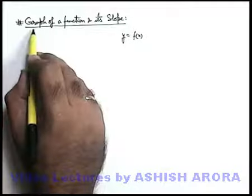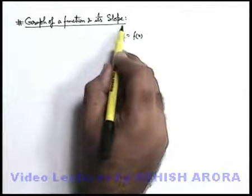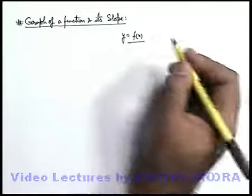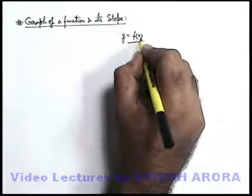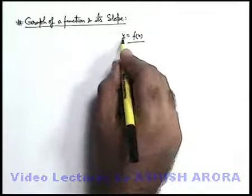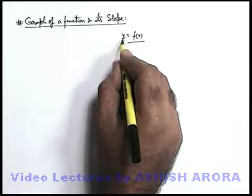Now we'll discuss another concept, that is graph of a function and its slope. We have studied about normal explicitly defined functions as y is equal to f of x. For each value of x there exists a particular value of y.